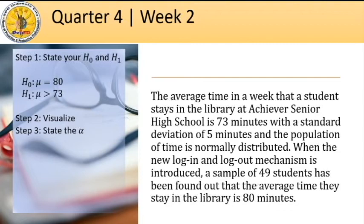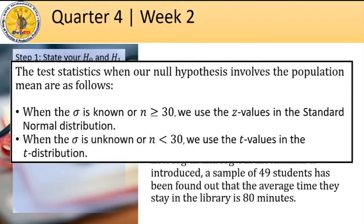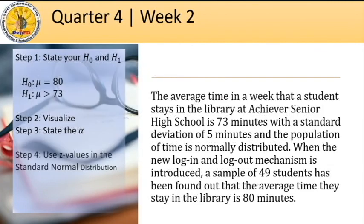For Step 4, the test statistics when our null hypothesis involves the population mean are as follows. When the standard deviation is known, or when the sample size is greater than or equal to 30, we use the z-values in the standard normal distribution. Else, when the standard deviation is unknown and n is less than 30, we use the t-values in the t-distribution. So once we finish all steps from 1 to 4, we can now decide on what to do with our null hypothesis in Step 5.